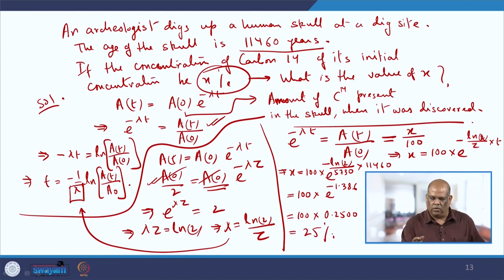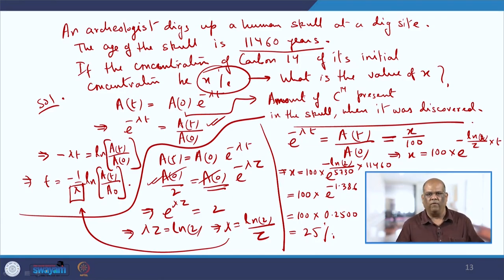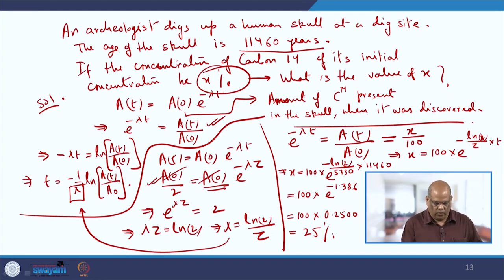So the concentration of carbon-14 relative to its initial concentration is 25 percent. We next move to another example.